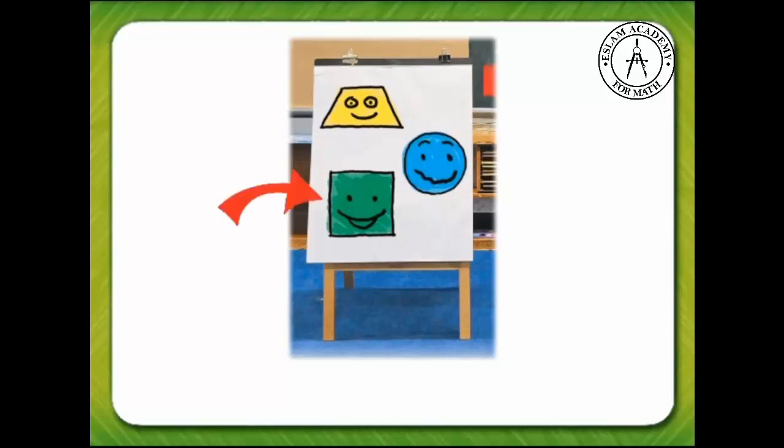What is the name of the green shape on the bottom of Ella's easel? That's right. It's a square.